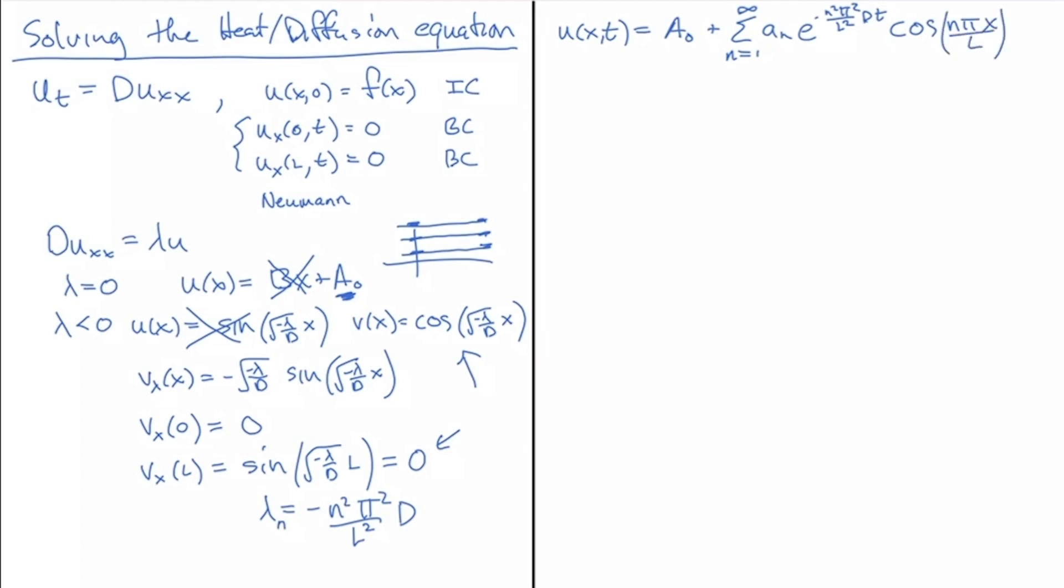And so, that's the general form of our solution. How do we figure out the a_naught and the a_n values? Well, what we have to do is plug in our initial condition. So, we take t equals zero, and we get a_naught plus the sum from n equal 1 to infinity of a_n cosine n pi x over l.